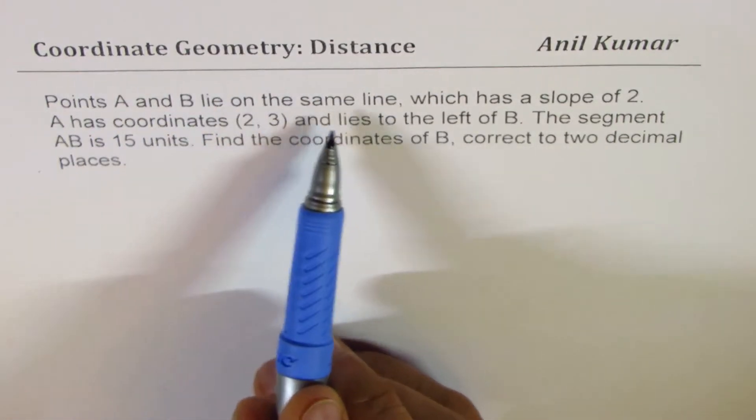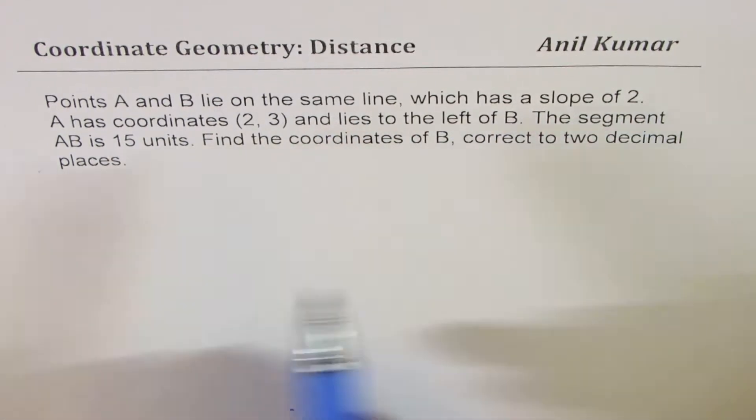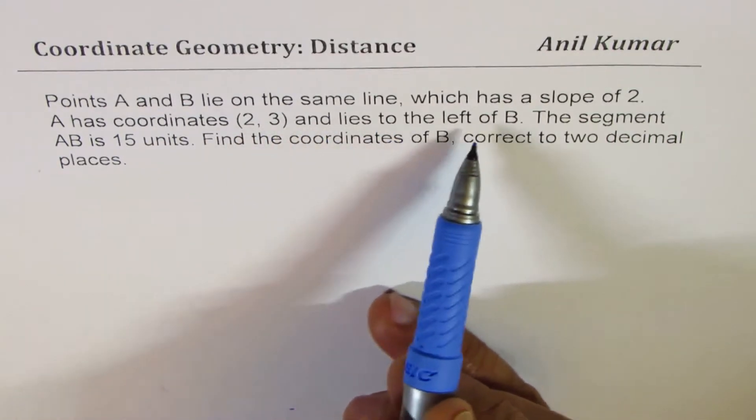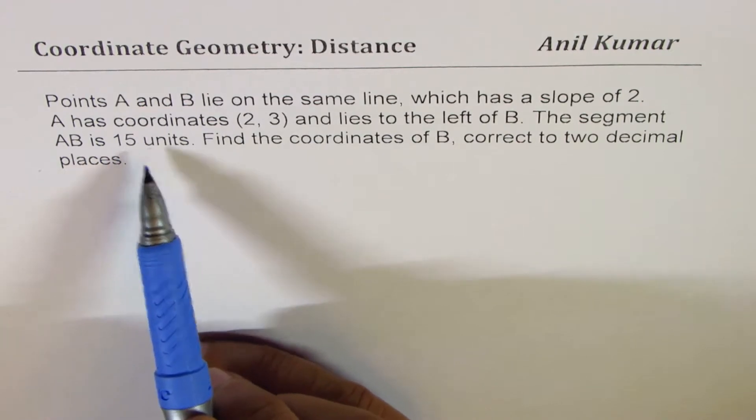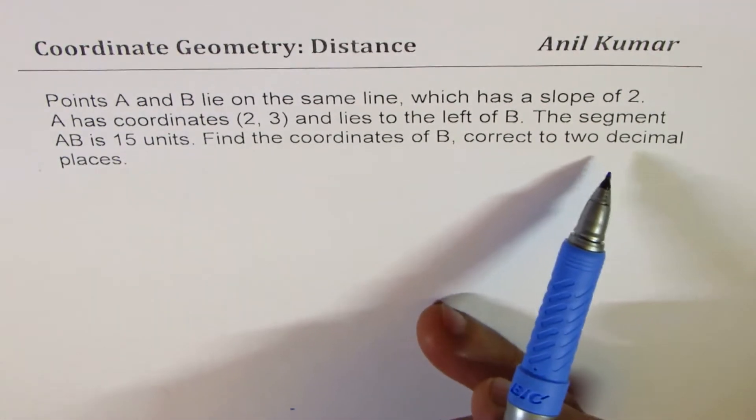Points A and B lie on the same line, which has a slope of 2. A has coordinate (2, 3) and lies to the left of B. The segment AB is 15 units. Find coordinates of B correct to two decimal places.